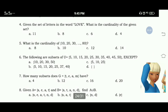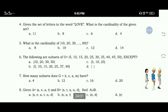Number 4: Given the set of letters in the word 'Love', what is the cardinality of the given set? In getting the cardinality, let's just count the number of elements or the letters. There are 4 letters in the word Love, so it means 4 elements. The cardinality is 4, Letter D.